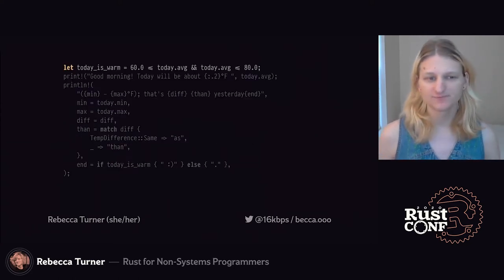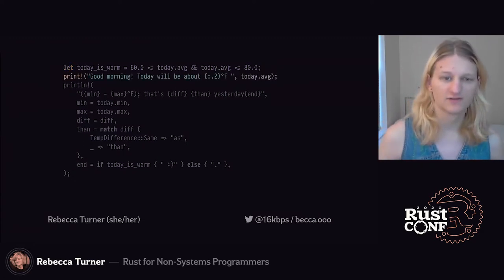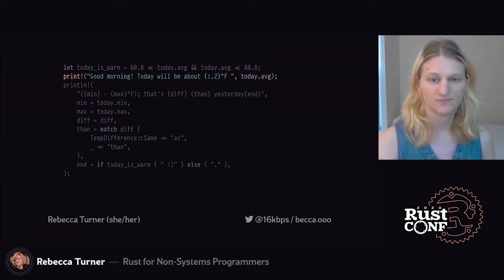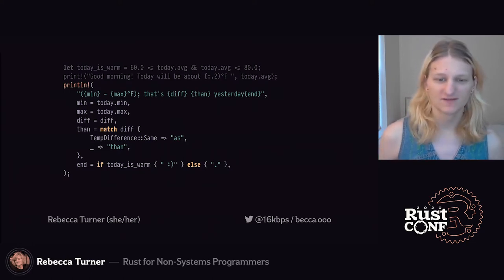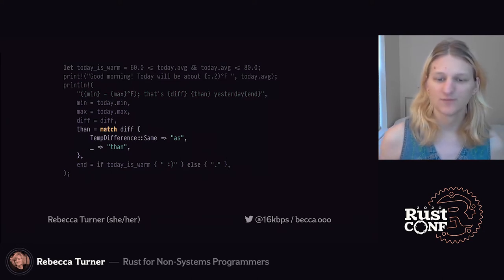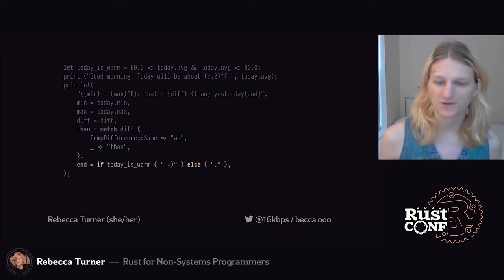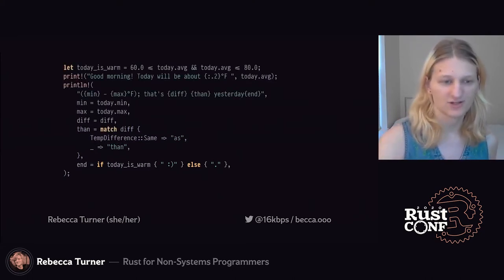To finish up, let's print out the data we've gathered. First, I want to print a smiley face for good weather, so I'll check if the average temperature today is between 60 and 80 degrees. Then we'll print the first line, truncating today's average temperature to two decimal places. Because `println!` is a macro, we can do weird things with the syntax, like this keyword argument syntax that's only used for the printing and formatting macros. Rust's `if`, `else`, and `match` statements return a value, so we can use them inline for argument values. And after printing all that information out, our program is done.